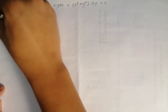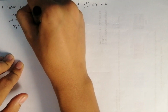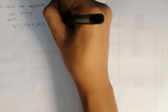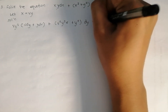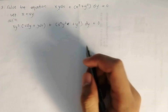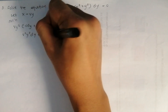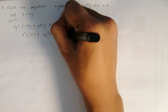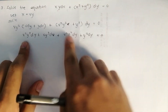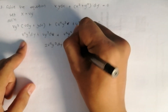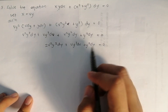Substituting x equals vy, so dx equals v dy plus y dv, into the equation: y²v(v dy plus y dv) plus (v²y² plus y²) dy equals 0. Distributing: v²y² dy plus vy³ dv plus v²y² dy plus y² dy equals 0. Combining like terms: 2v²y² dy plus vy³ dv plus y² dy equals 0.